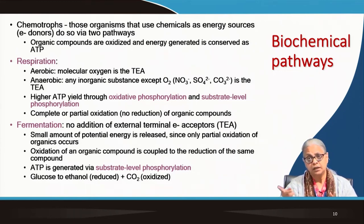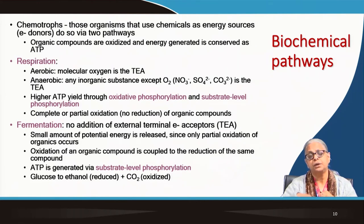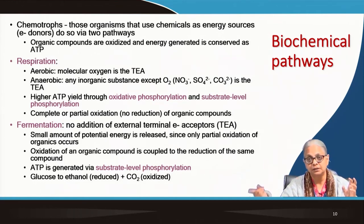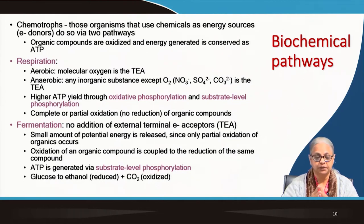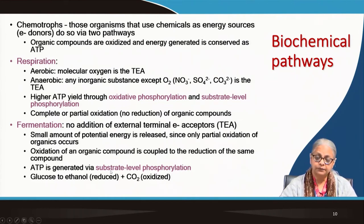In fermentation, in contrast to respiration, there is no external terminal electron acceptor. The organic compound — whether pyruvate, acetate, or glucose — is going to be partially oxidized and partially reduced. Half of it will be reduced and half will be oxidized. Whatever electrons are generated in the oxidation reaction will be picked up in the reduction reaction. Very small amounts of energy are released because you get only partial oxidation. ATP is generated by substrate-level phosphorylation only — there is no oxidative phosphorylation. Glucose can be converted to ethanol; lactose can be converted to lactic acid.